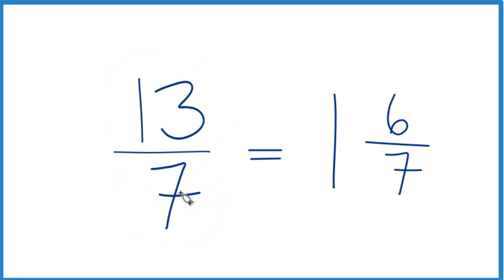That's it. This is Dr. B simplifying and writing the mixed number for 13 sevenths. The answer, 1 and 6 sevenths. Thanks for watching.